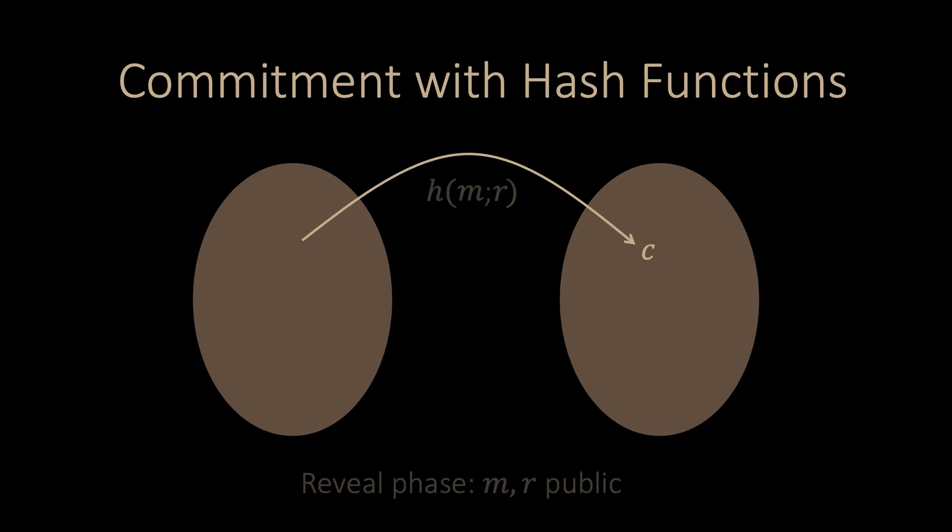In the reveal phase, Watson will send both the message M and the random number R, and Sherlock can then recompute the hash function. This makes the protocol correct. If both parties behave honestly, the verification process will always succeed. But what about hiding and binding properties?